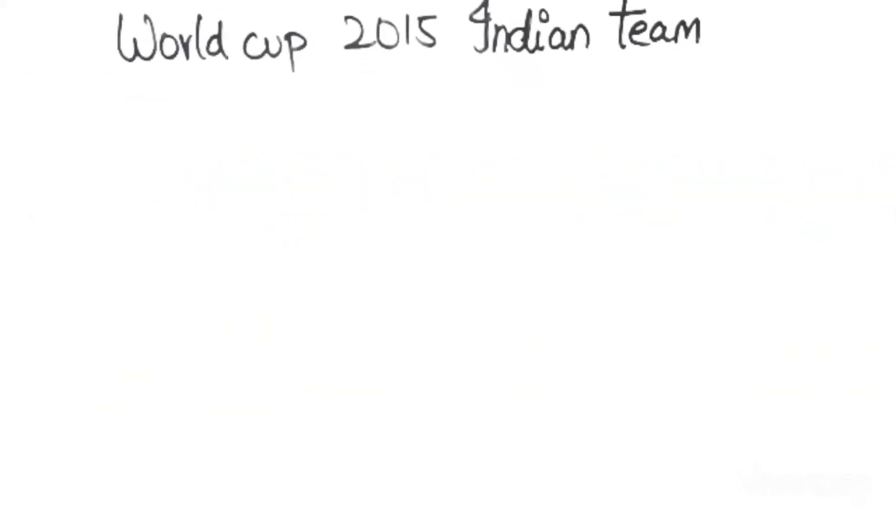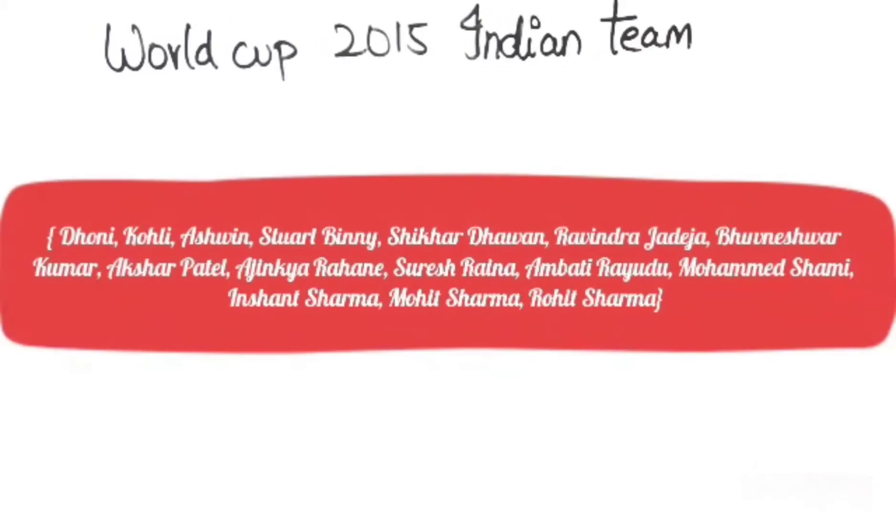If you were to write the set of players in the World Cup 2015 Indian team, we will just list down all the players, separate them by commas, add curly brackets, and we have a set. As simple as that. Every object in this group, a player in this case, is called an element of the set.